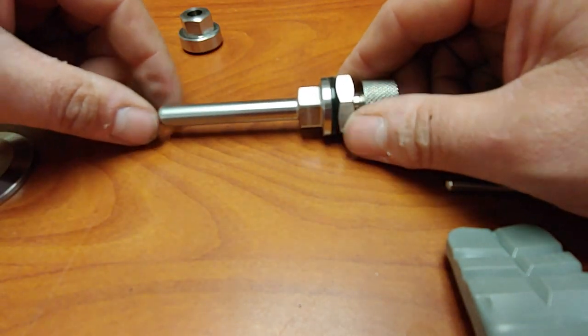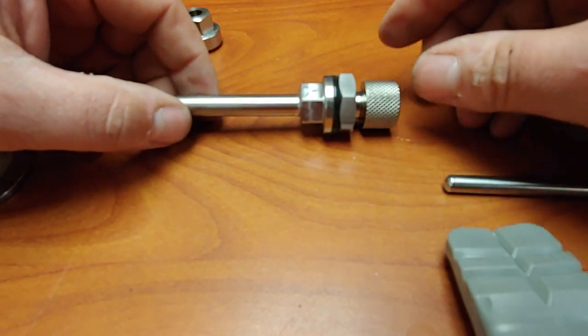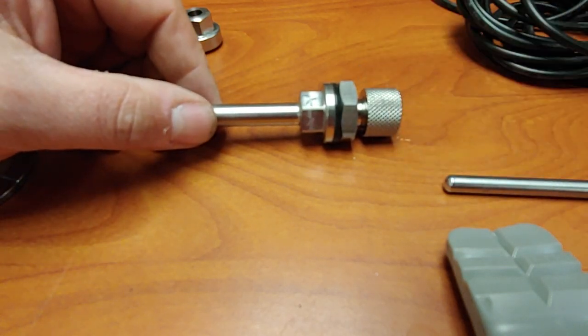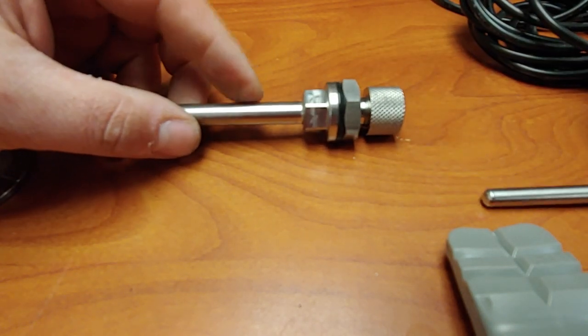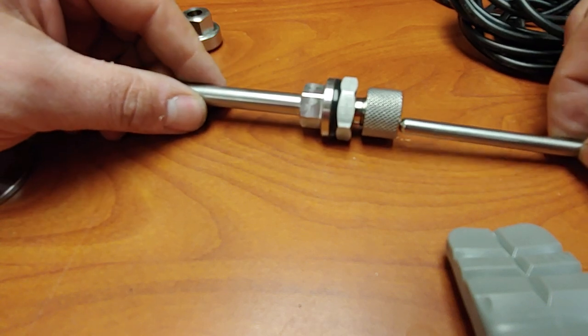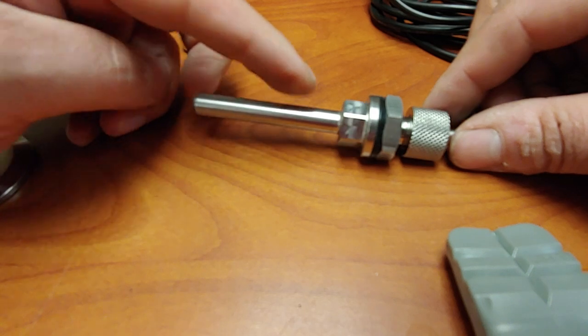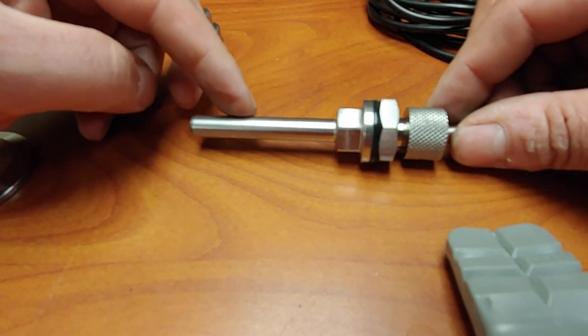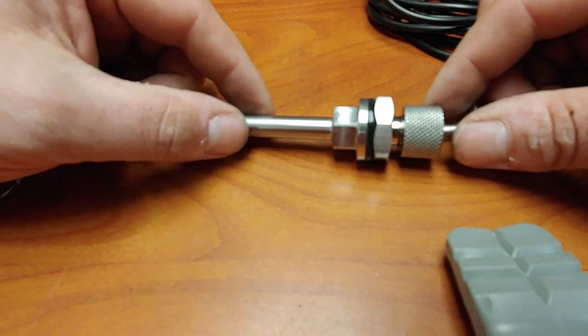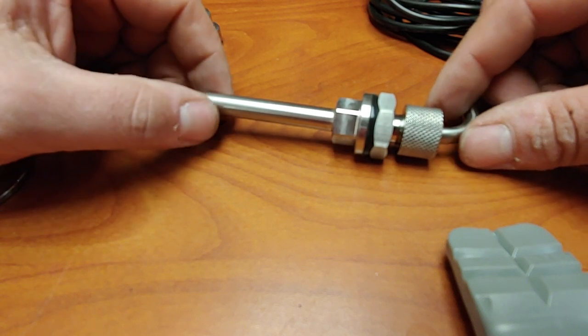Now your probe will be isolated from the inside of the liquid of the kettle, at least with this layer of stainless. When you slide this in and bottom it out, your probe is sitting inside this sheath.